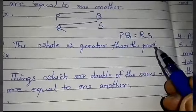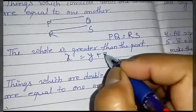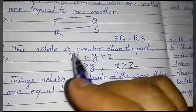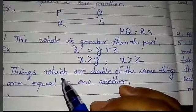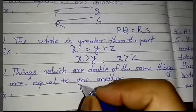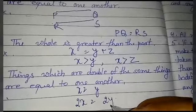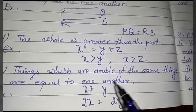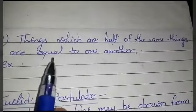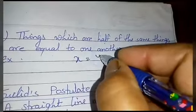Fifth axiom — very important for exams: the whole is greater than the part. If x = y + z, then x > y and x > z. Sixth axiom: things which are double of the same thing are equal to one another — if x = y, then 2x = 2y. Seventh axiom: things which are half of the same thing are equal to one another — if x = y, then x/2 = y/2.